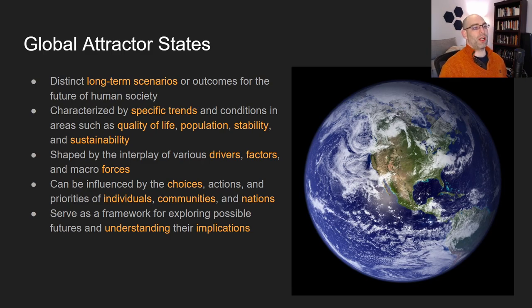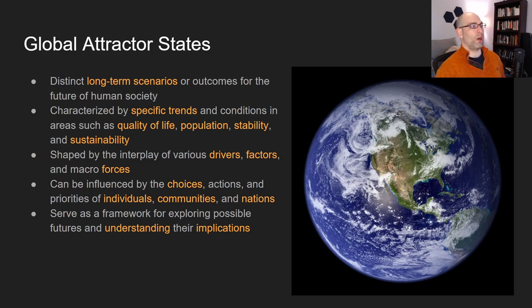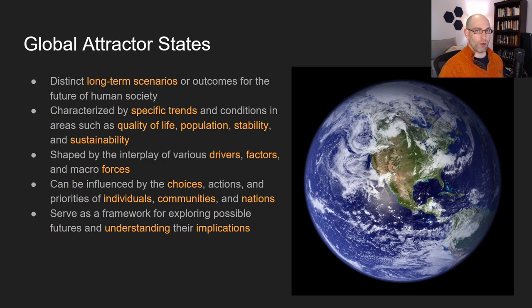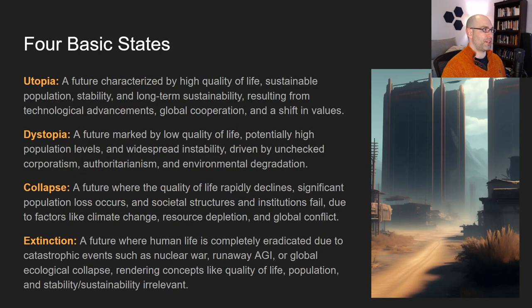Introduction — what are we talking about? Let's define some terms. First, we need to talk about the concept of global attractor states. A global attractor state is a long-term scenario or outcome for the entirety of humanity, characterized by specific trends and factors. The ones I chose for this video are quality of life, population, stability, and sustainability. These attractor states are driven by macroeconomic forces such as technology, and also influenced by the collective choices of individuals, corporations, and nations. The four basic singularity outcomes are utopia, dystopia, collapse, and extinction.